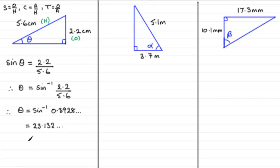And then if we round this up to, say, one decimal place, then we've got theta equals 23.1 degrees to one decimal place, one dp.